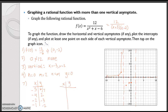When I plug in f of x equals 1, I get negative 3. I'm seeing some symmetry here — maybe a parabola shape going on. When I plug in 3, I get 2, so it's going to be up there. When I plug in 4, I get 6/7ths again.